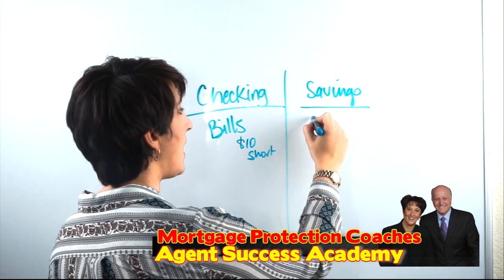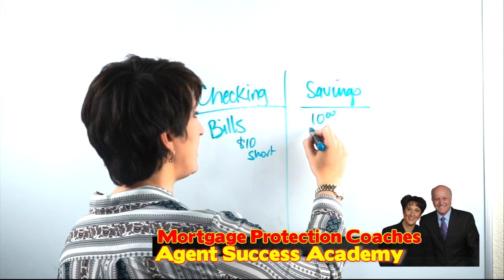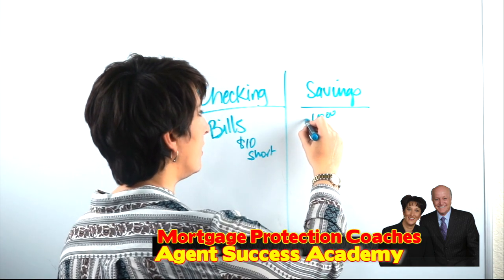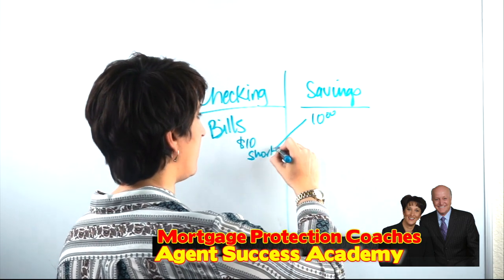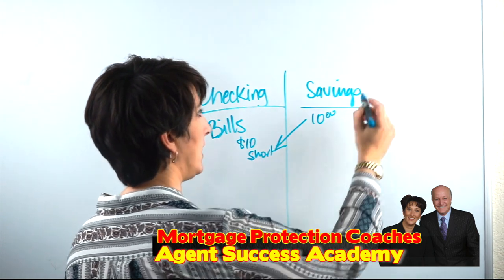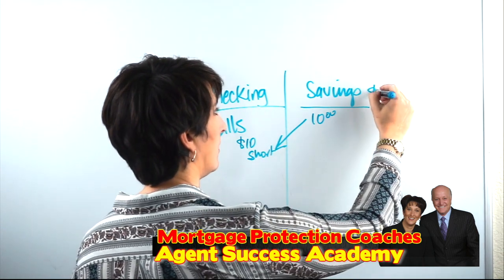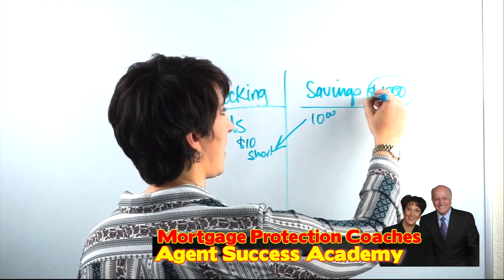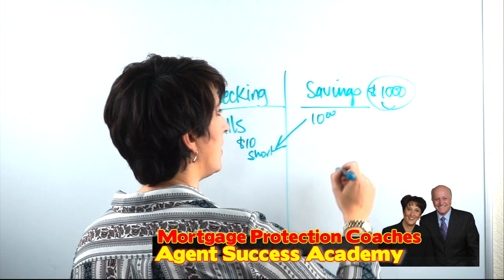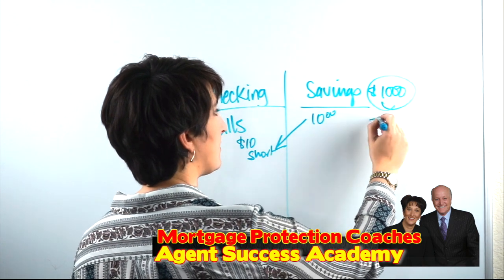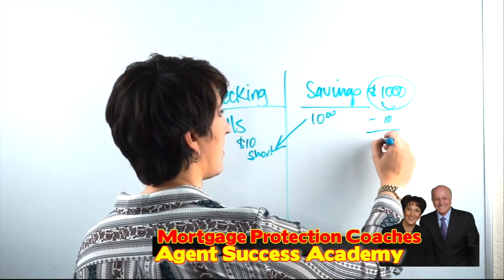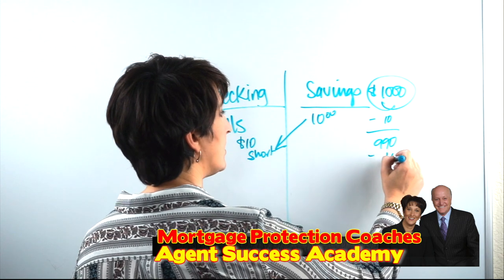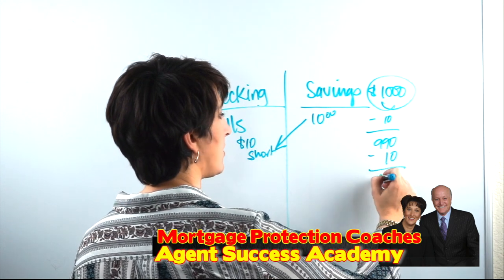So every month we take $10 from our savings account and put it into our checking account. And remember, we started our savings account with $1,000. So now we have to subtract $10, now we have $990, and so on and so forth.